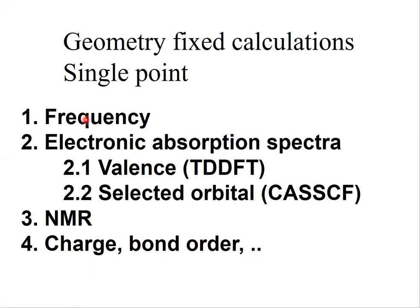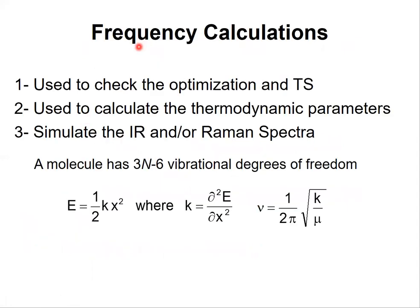In a single point calculation you ask the program to do something other than changing geometry, such as a frequency calculation, electronic absorption spectra using TDDFT or core electron methods like CAS (complete active space self-consistent field), NMR spectra, or simple calculations like charge and bond order. The frequency calculation is a special type because it gives us three things. First, it is used to check the optimization and the transition state itself. You should first do a geometry optimization to get the local minimum before computing spectra.